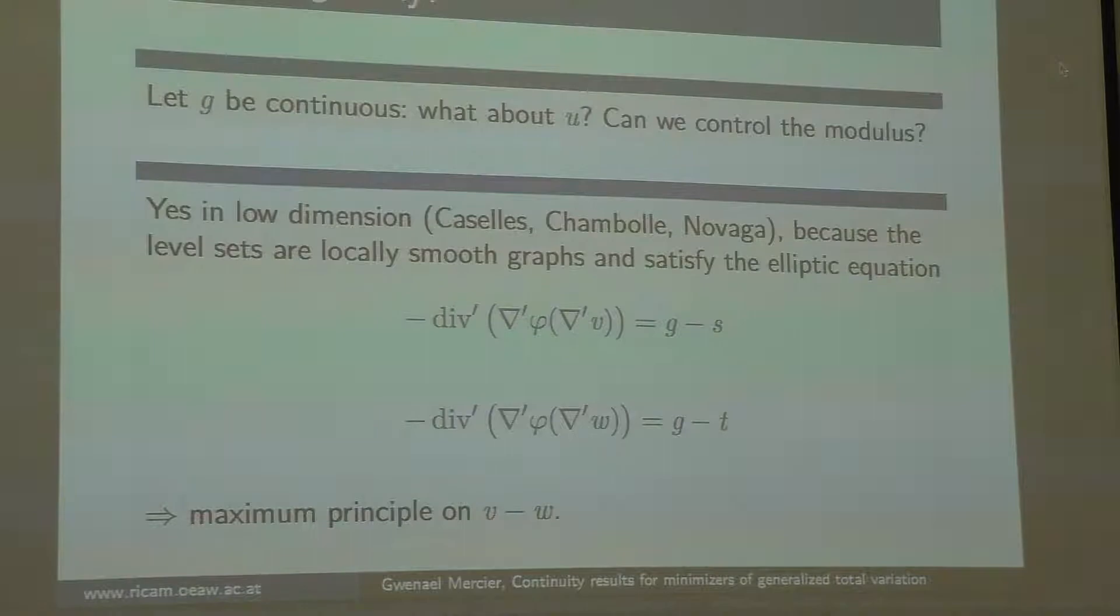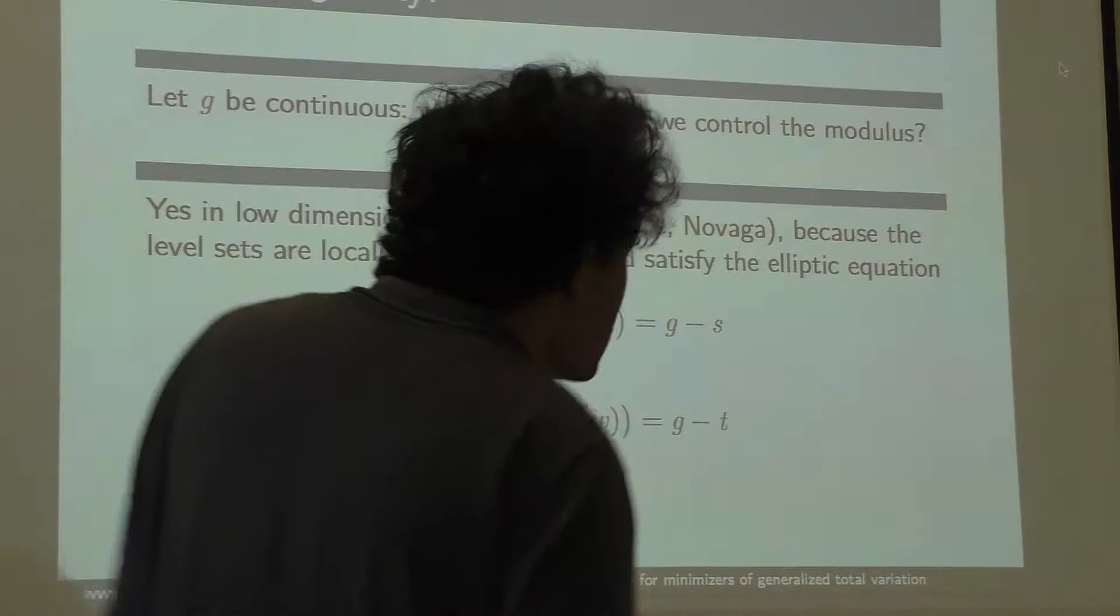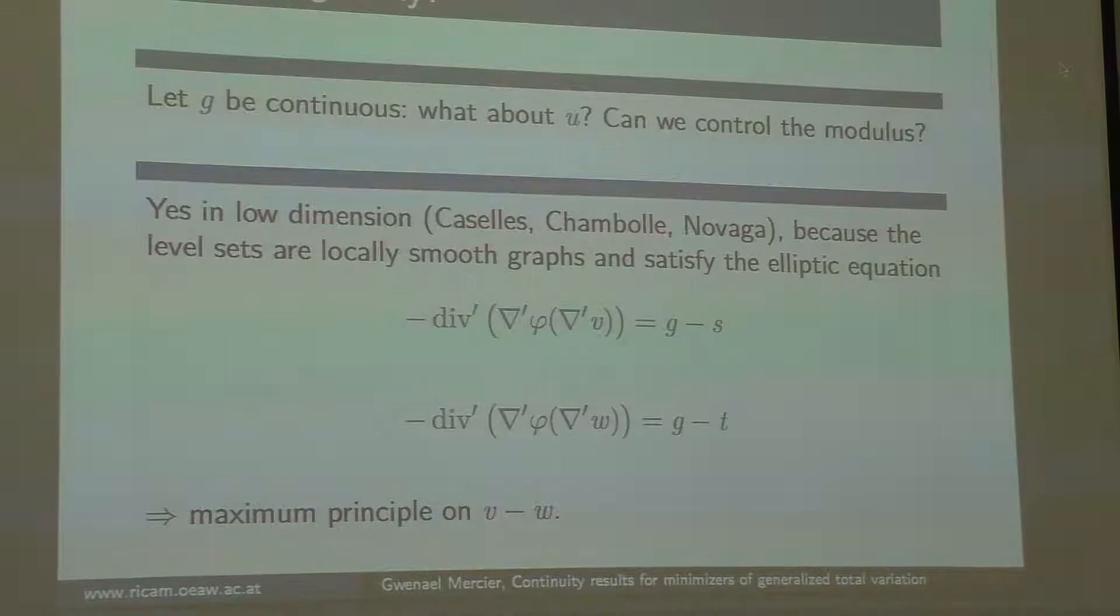The next question is, you removed one type of discontinuities, can you remove another type as well? If I rephrase, if my g is continuous or continuous somewhere, can I hope to get the same continuity for the u, and maybe even to control the modulus of continuity? Well, you can do that in very low dimension.